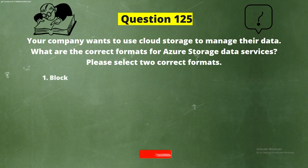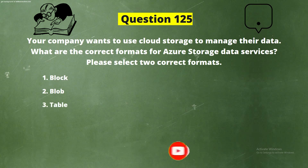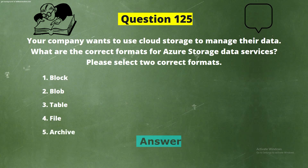And the options are: Option 1, Block. Option 2, Blob. Option 3, Table. Option 4, File. Option 5, Archive. And the correct answers are Option 2, Blob, and Option 4, File.